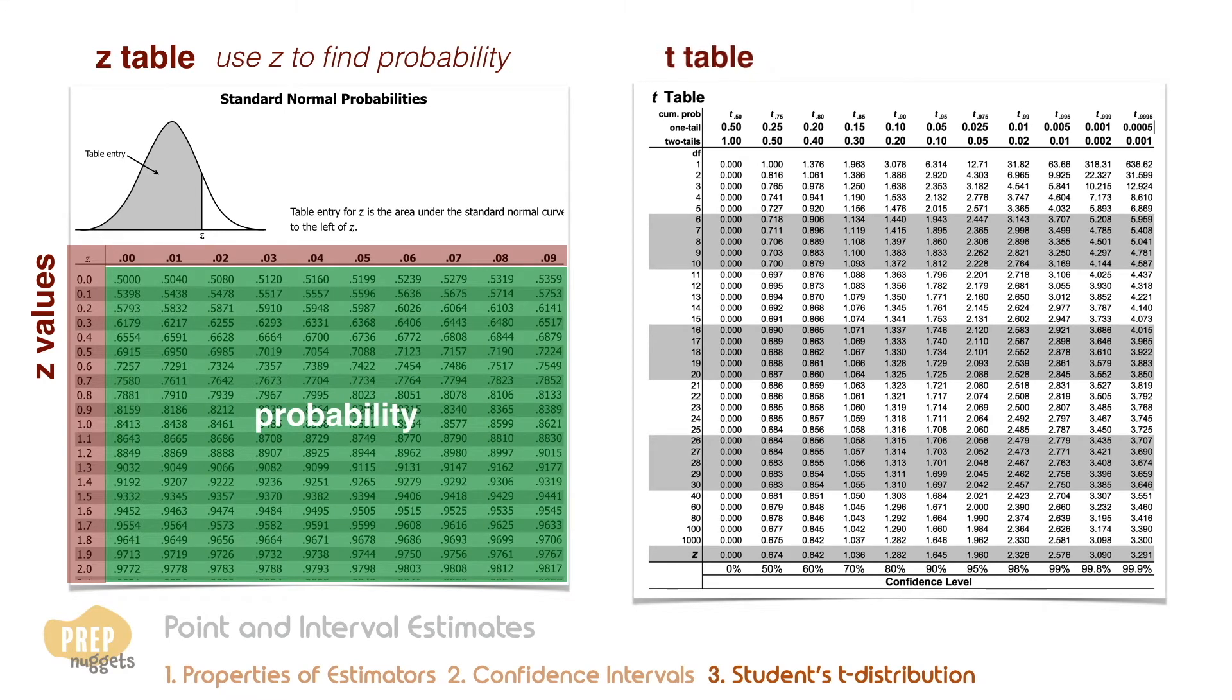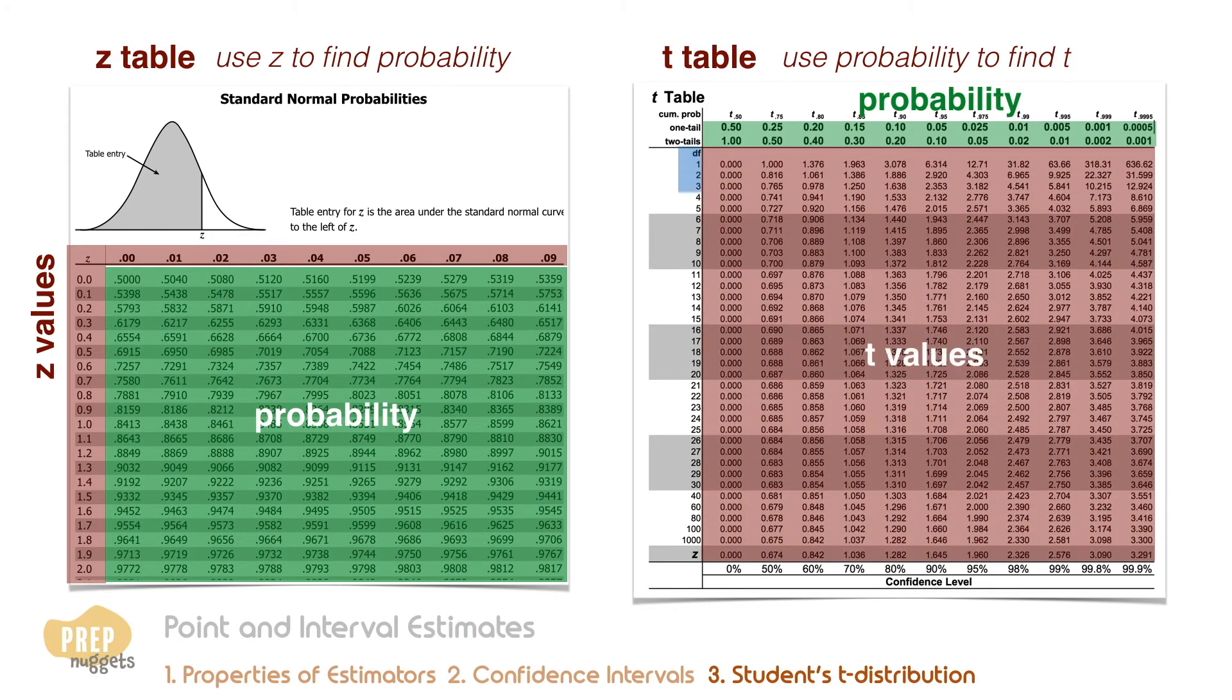For the T table, the focus is on finding the appropriate T value to use for calculating confidence intervals and perform hypothesis testing. As such, the column headings are the probabilities at the tails. We look down the table to find the appropriate T value based on the degrees of freedom.